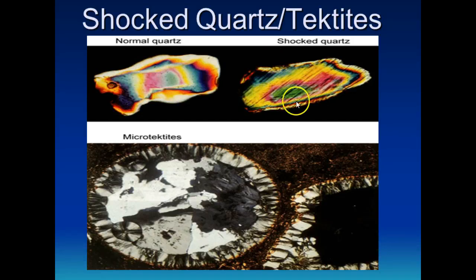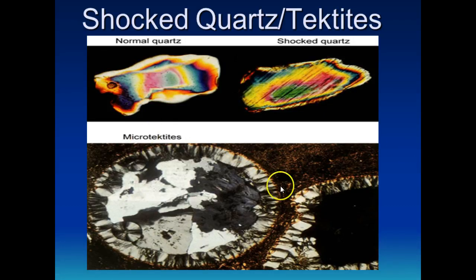Now what about these microtectites? Write in your notes that geologically speaking, microtectites are formed when molten rock — that's melted rock — is ejected into the atmosphere before touching the ground and cooling. Volcanoes and meteors are both sources of microtectites.